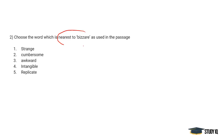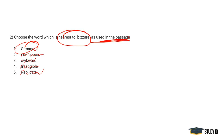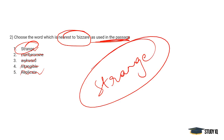Choose a word nearest to 'bizarre' as used in the passage. Bizarre means absurd and strange. Options include cumbersome — that is not correct. Awkward is more like a feeling. Intangible means that which cannot be touched or felt. Replicate means trying to copy things. The correct answer is 'strange,' which is actually the closest in meaning to bizarre.